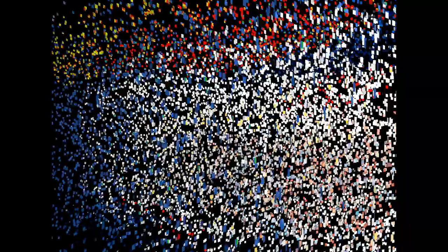Electronegativity is kind of the flip side of ionization energy. Electronegativity is how much an atom wants to pull in electrons from other atoms. There can be a distinction between electronegativity and something called electron affinity. In this class, we'll generally use the term electronegativity. Technically, electron affinity is the desire of an atom to pull in electrons from other atoms, whereas electronegativity is how strongly a polar covalent bond wants to pull on the electrons within that bond. For the time being, electronegativity is how much an atom wants to take electrons away from other atoms.